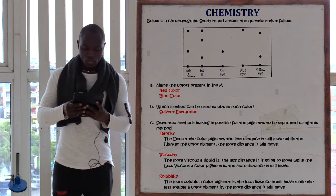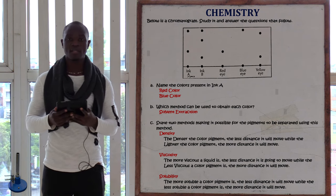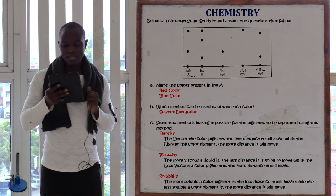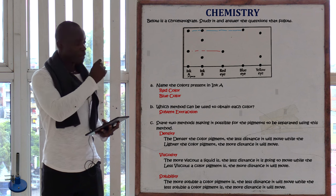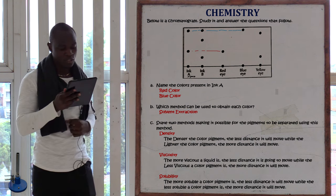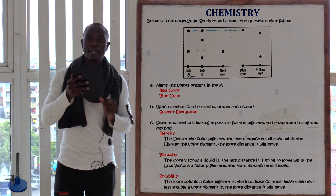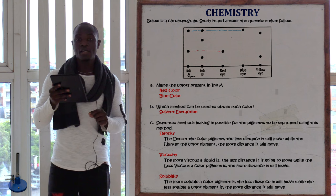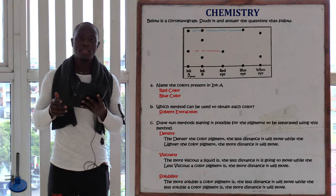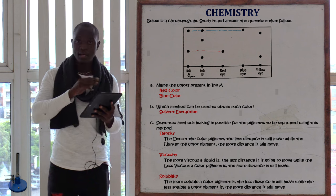Question four involves a chromatogram. The first part asks: name the colors present in ink A. We check which pigments of A are on the same horizontal line as other pigments in the chromatogram. Pigment A is on the same horizontal line as red, so one color in ink A is red. It is also on the same horizontal line as blue, so ink A contains red color and blue color.